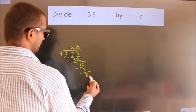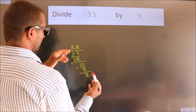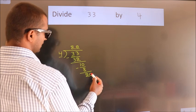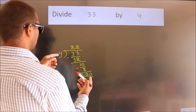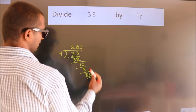After this, we already have the decimal, so directly take 0. So 20. When do we get 20 in the 4 table? 4 times 5 equals 20.